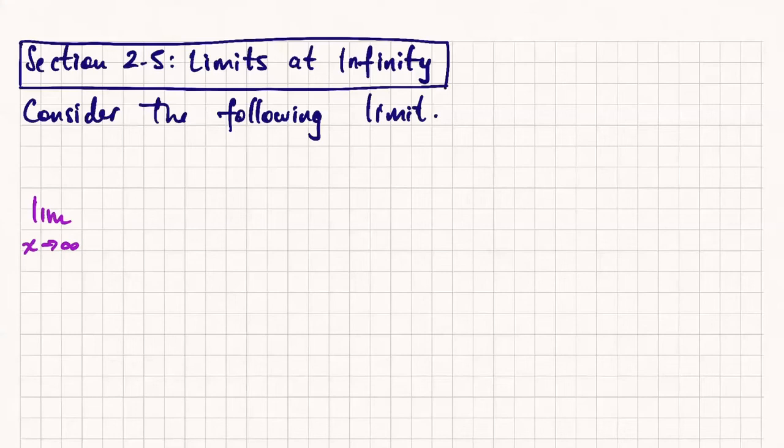Let's look, limit as x goes to infinity of 1 over x. All right, so let's try and break this down quickly. We already kind of know what these symbols mean from last time.